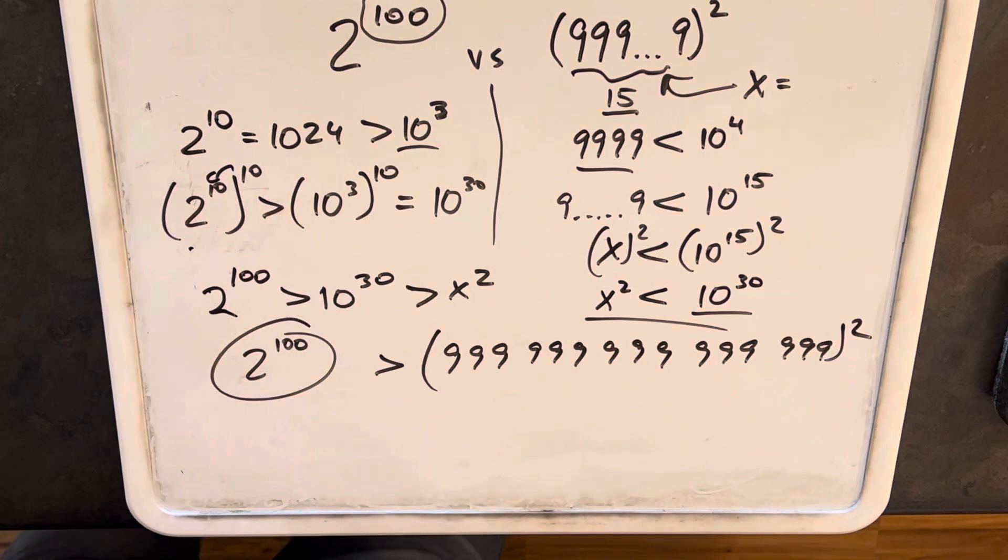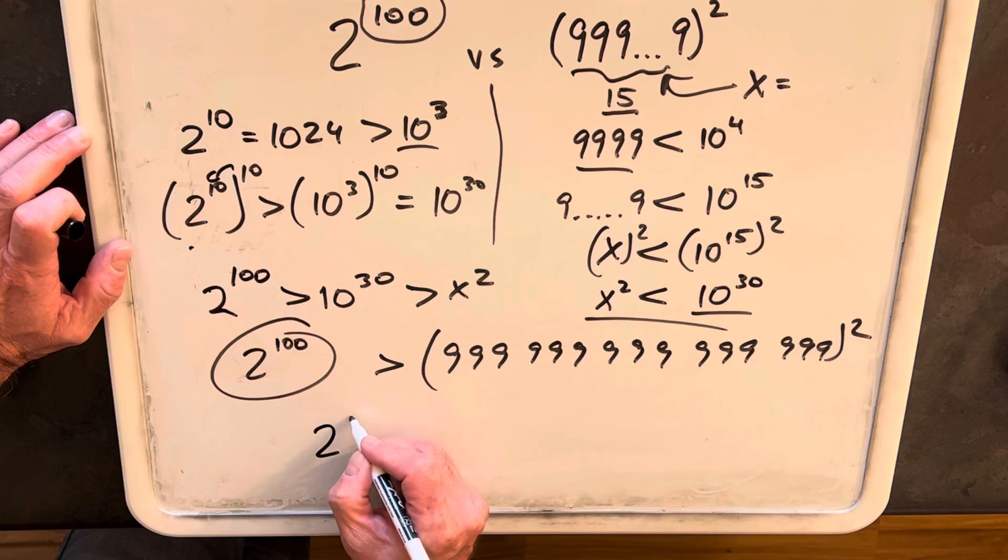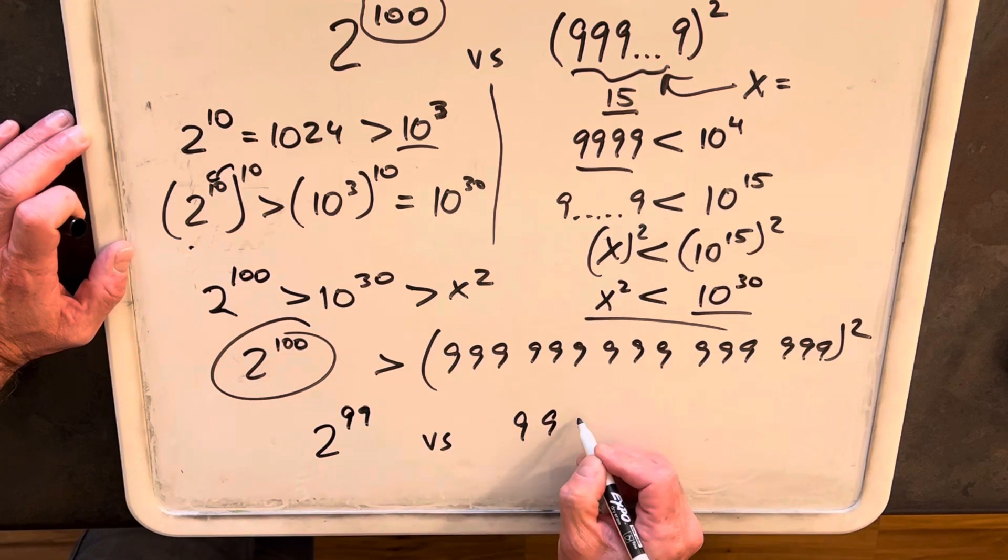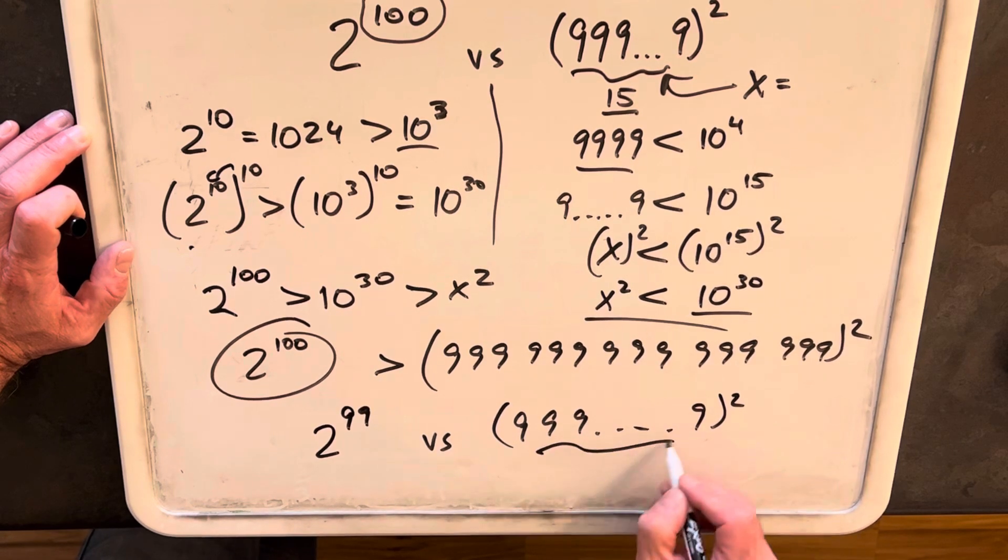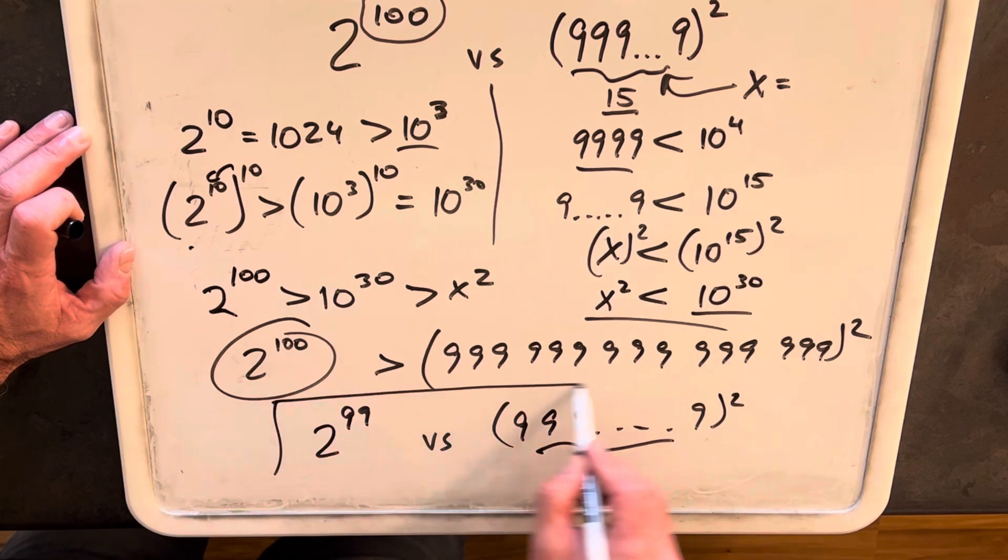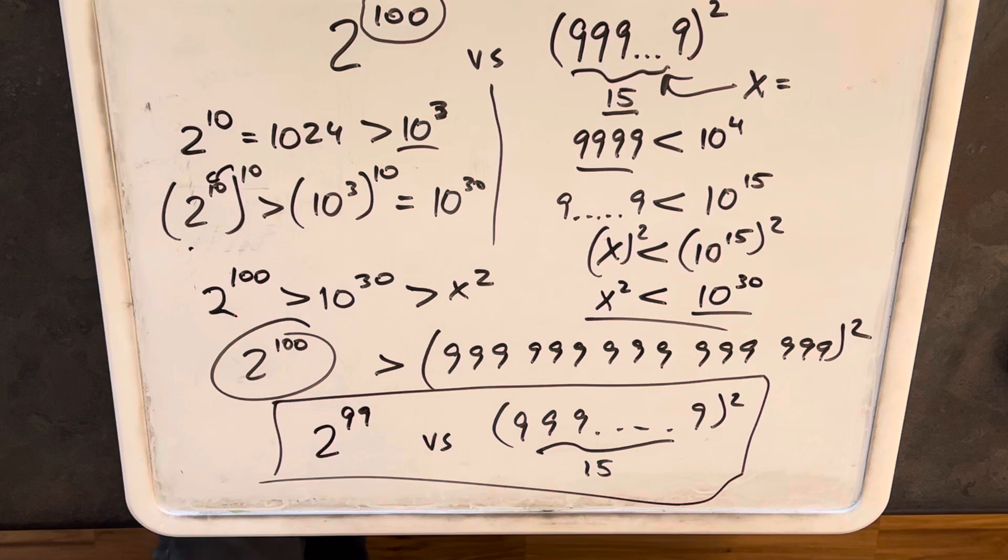So then my challenge question, my homework problem for you to try, this is hard. So this is the problem that I couldn't solve. So my challenge for you is: which is bigger, 2 to the 99 versus this whole thing squared, which is bigger? So if you can solve that, put that in the comments and then I'll learn something too.